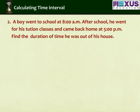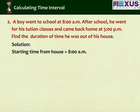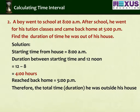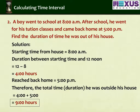A boy went to school at 8 a.m. After school, he went to tuition classes and came back home at 5 p.m. Find the duration of time he was out of his house. Solution: starting time from house is 8 a.m. Duration between starting time and 12 noon is 12 minus 8, equal to 4 hours. Reached back home at 5 p.m. Therefore, duration he was outside his house is 4 plus 5, that is 9 hours.